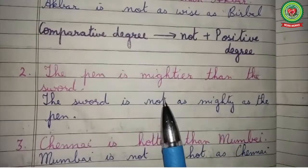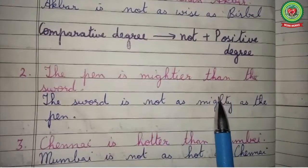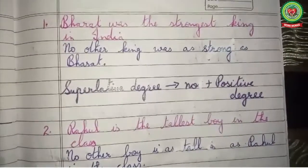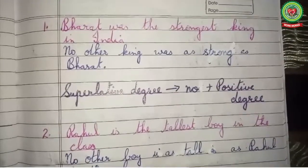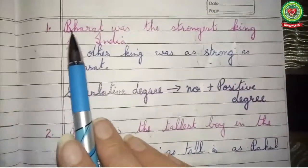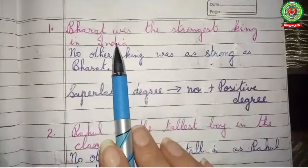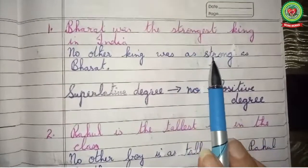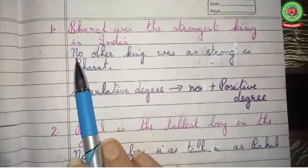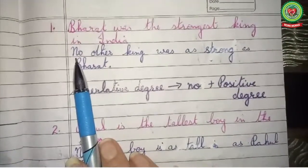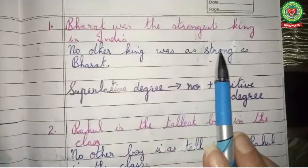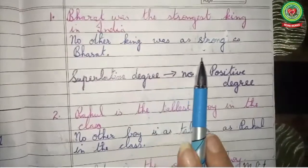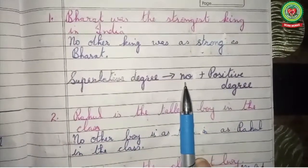Let's see more examples where one degree gets converted to another. Number one: 'Bharat was the strongest king in India.' Here the superlative degree 'strongest' gets converted to positive degree 'strong,' and 'no' is added at the beginning of the sentence. The answer is: 'No other king was as strong as Bharat.' The rule is: superlative degree converts to positive degree and 'no' is added at the beginning of the sentence.